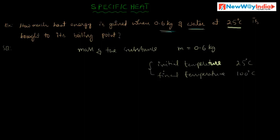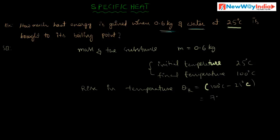We have to find the rise in temperature. The rise in temperature, theta, is equal to final temperature minus initial temperature, which is 100 minus 25, equal to 75 degree centigrade.